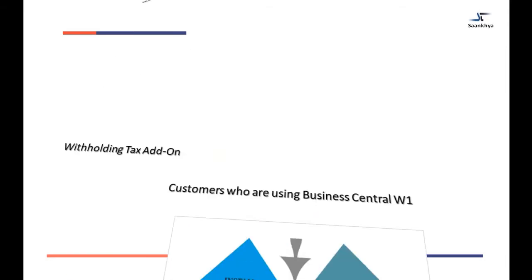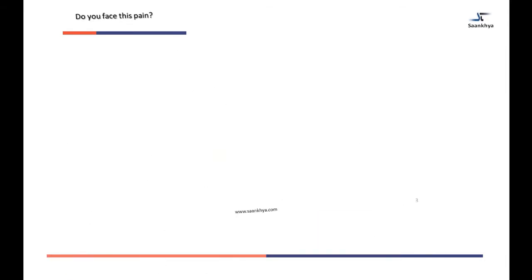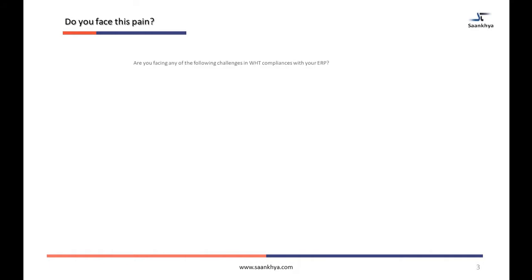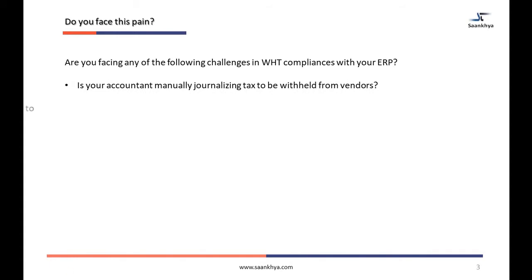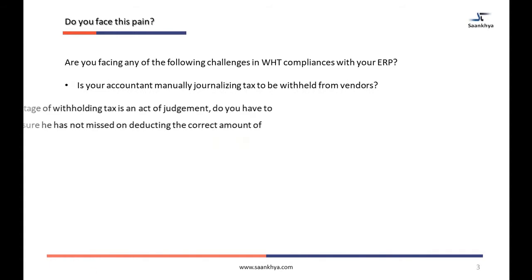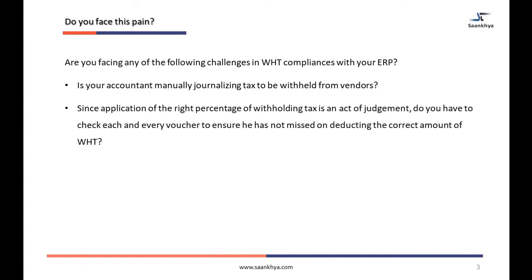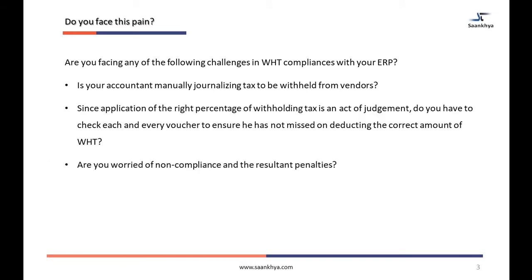Are you having problems with WHT compliance in Business Central? Does your Business Central compel your accountant to manually journalise WHT? Does the missing function duplicate your efforts to put maker-checker controls in place?